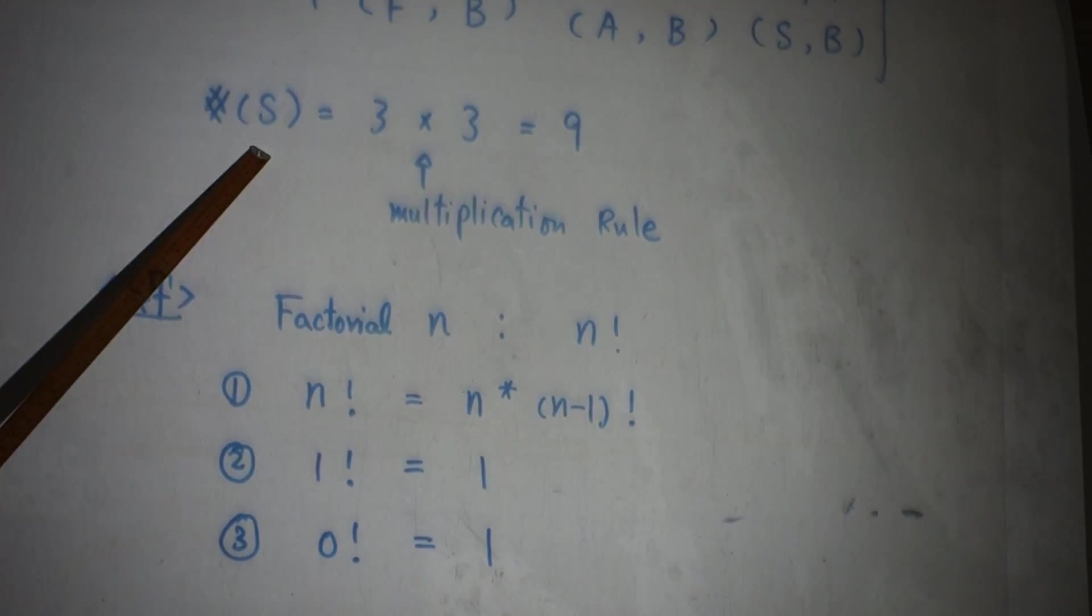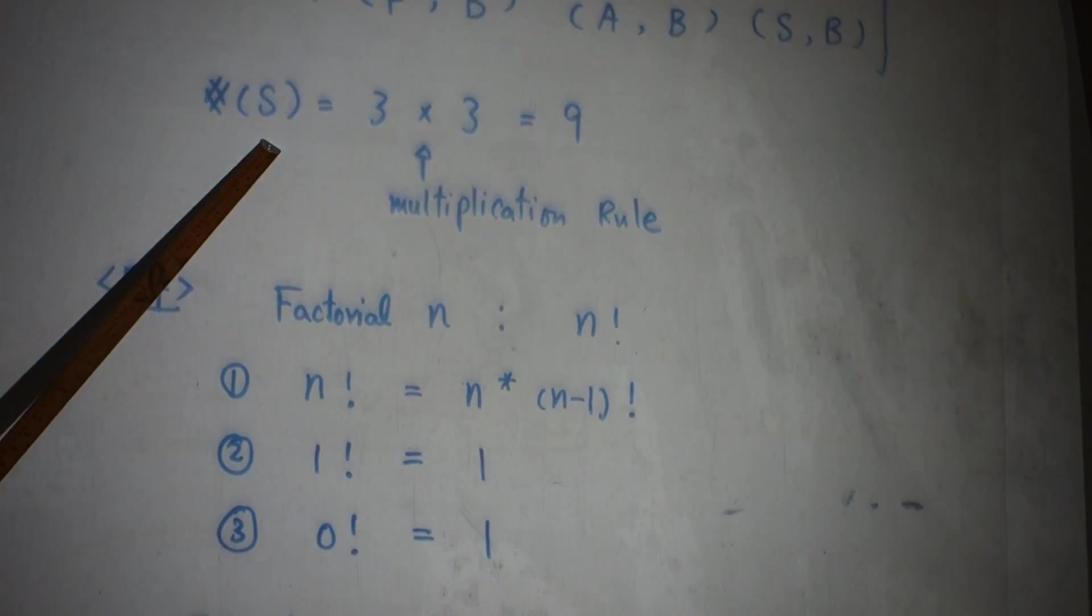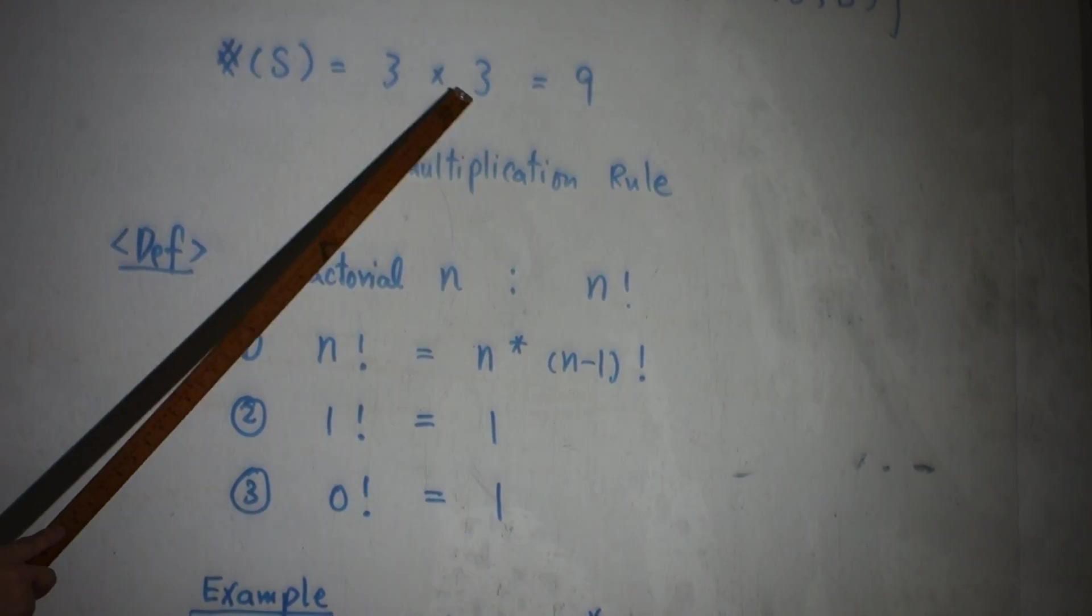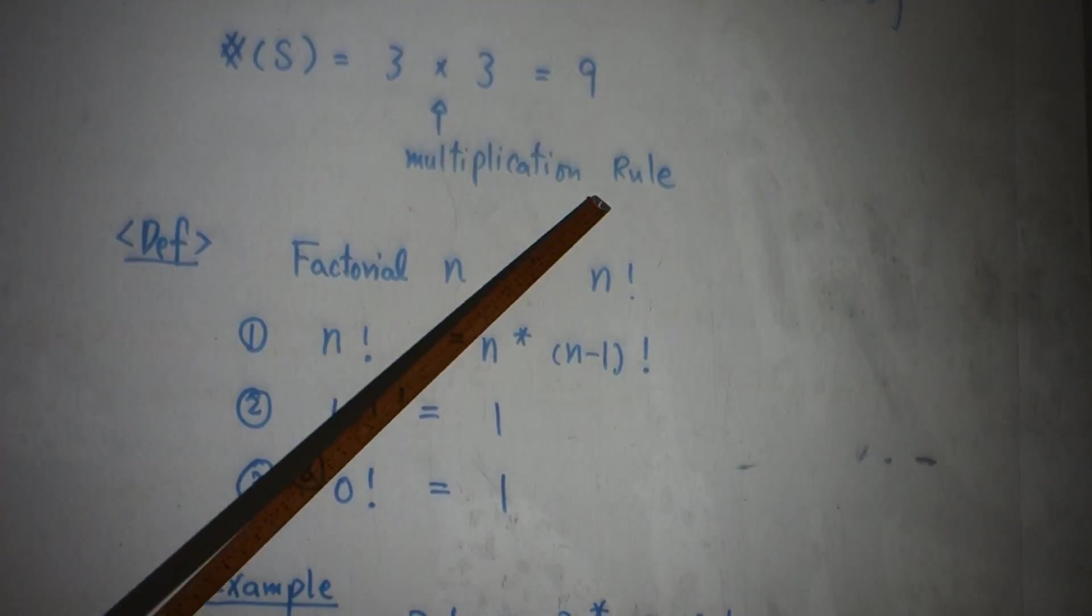So there are nine possible outcomes in the sample space. How you get nine? It's three times three. It's not what? Three plus three. So multiplication rule arises.